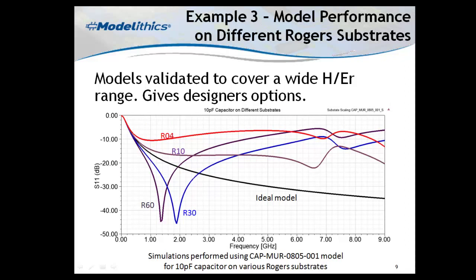Modelethics models are validated on multiple substrates and pad geometries for maximum flexibility to suit designers' needs. This is a key advantage over S-parameter files that are only good for certain substrates and certain pads. Since they are equivalent circuit models, they can be extrapolated in frequency with accurate results within reason. Here you can see the change in a capacitor's simulated performance when different substrate properties are passed into the model.